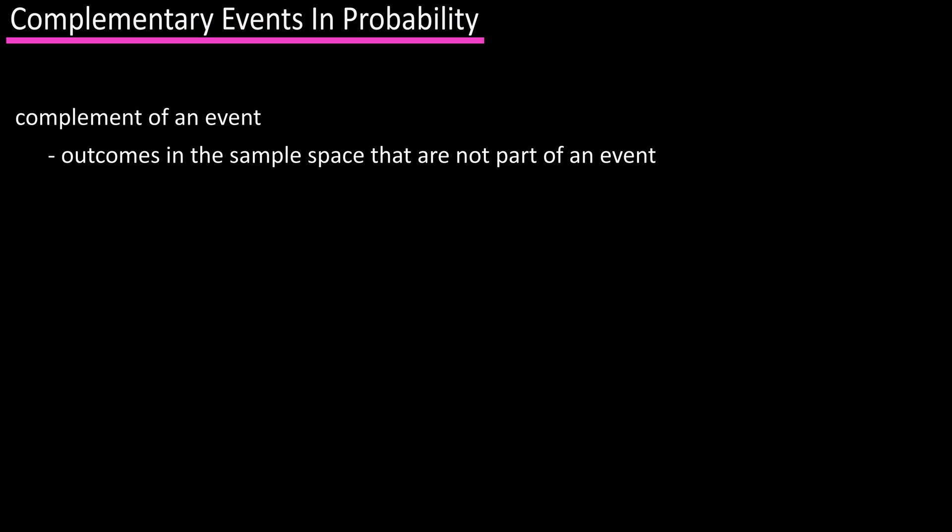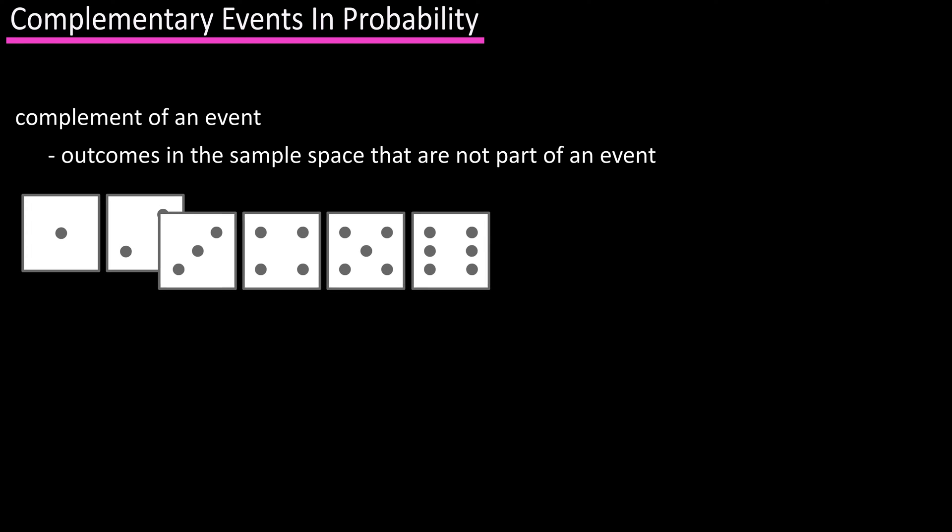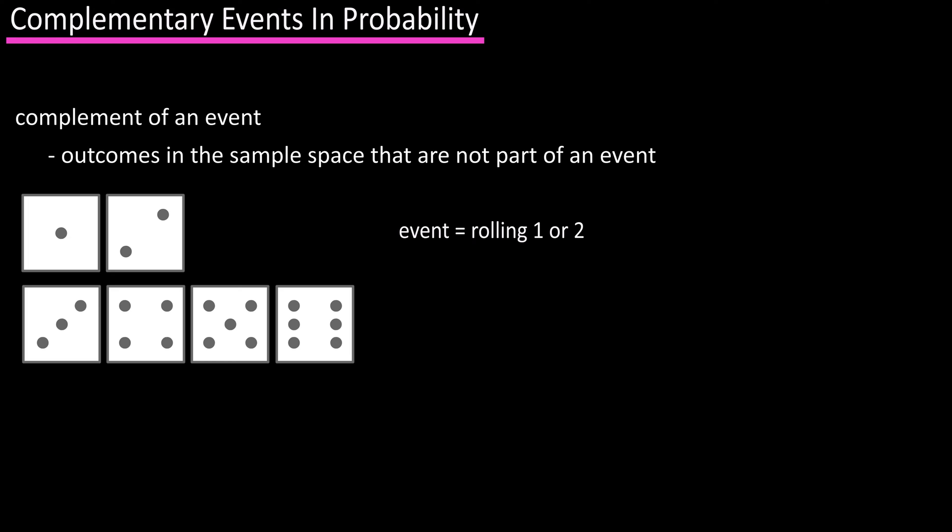In probability, the complement of an event is the outcomes in the sample space that are not part of the event. For instance, if we were rolling a die and we assign the event to be rolling a 1 or a 2, the complement of that event is rolling a 3 through 6.